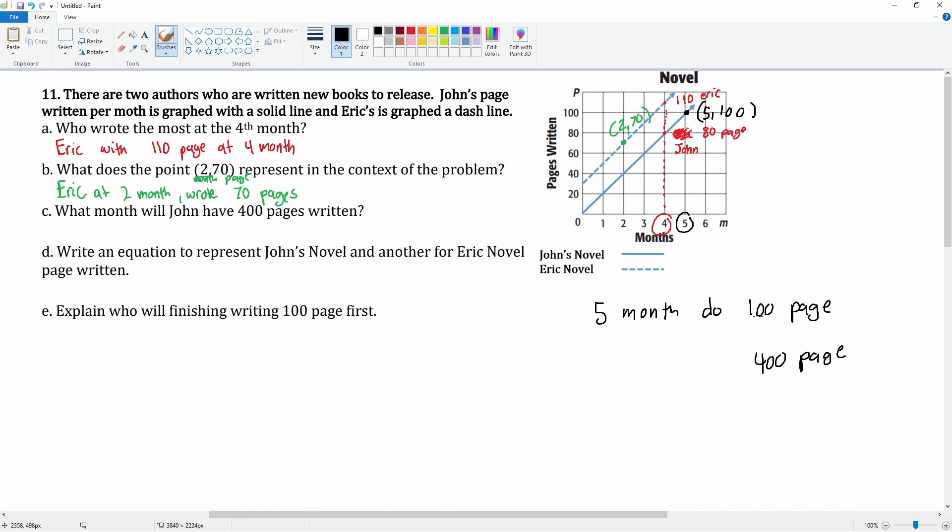multiply the 100 pages by 4, so from here to here I multiply by 4. So from here to here I would also have to multiply by 4, so this would be at the 20th month. So what month will John have 400 pages written? We would say at the 20th month.